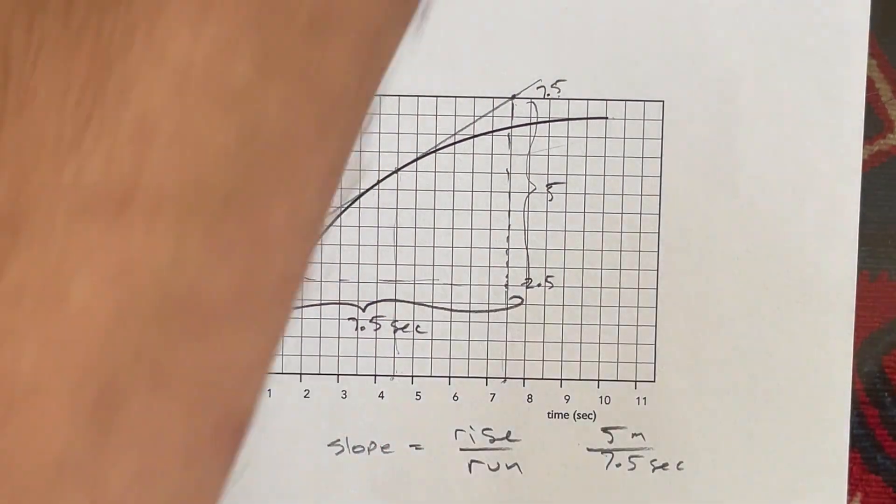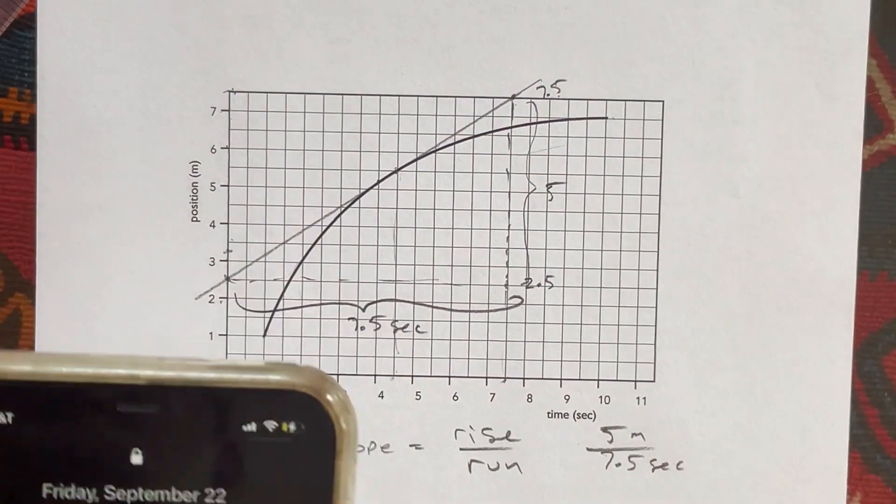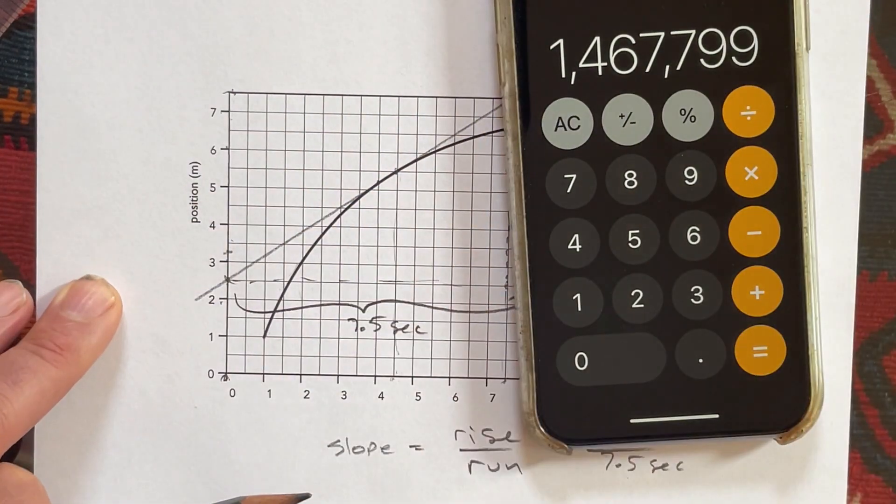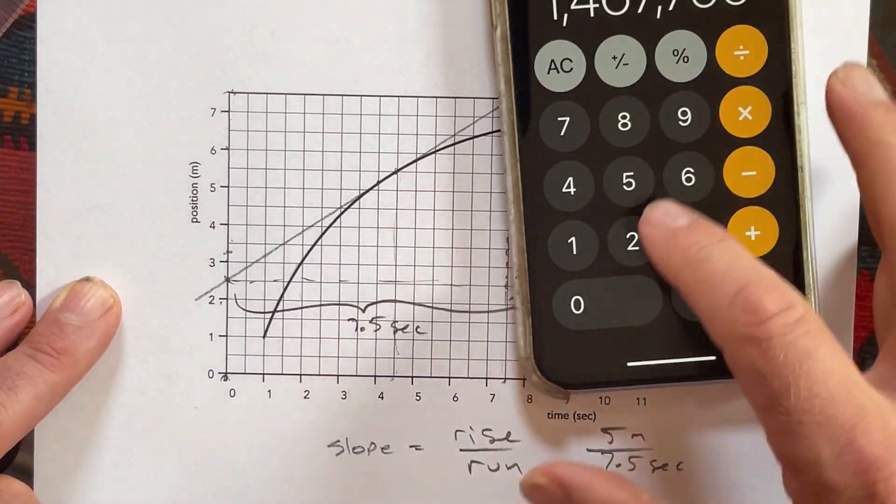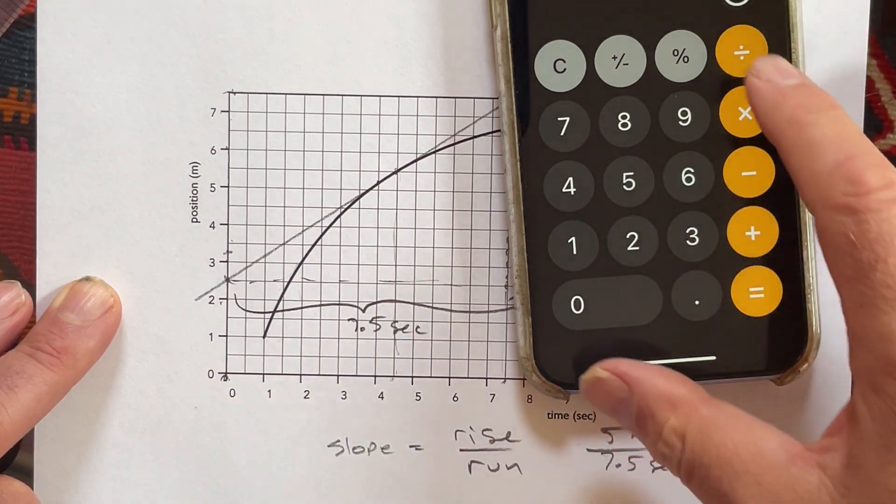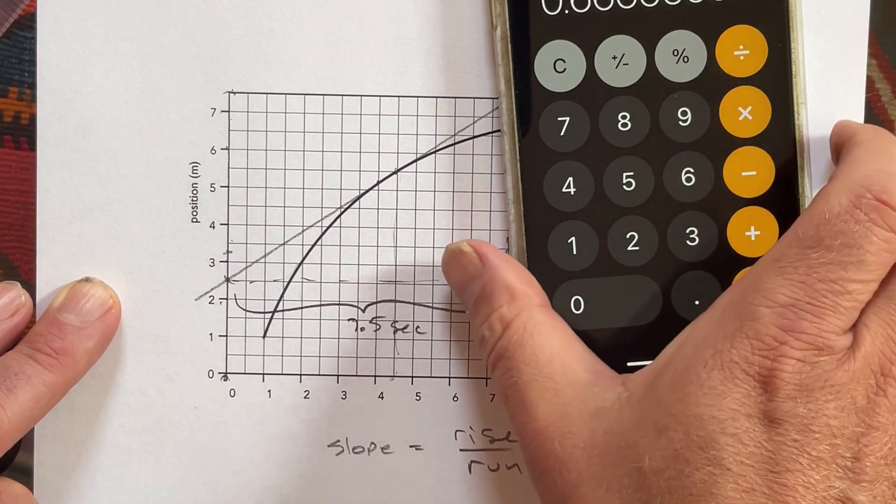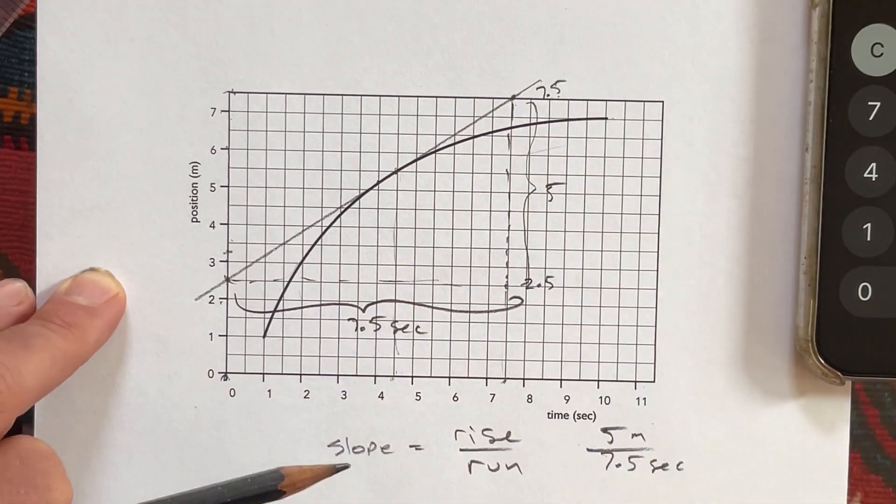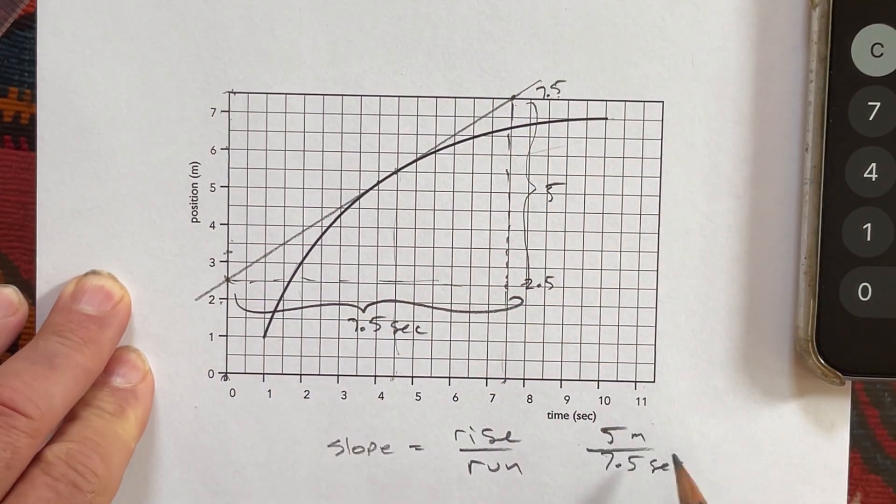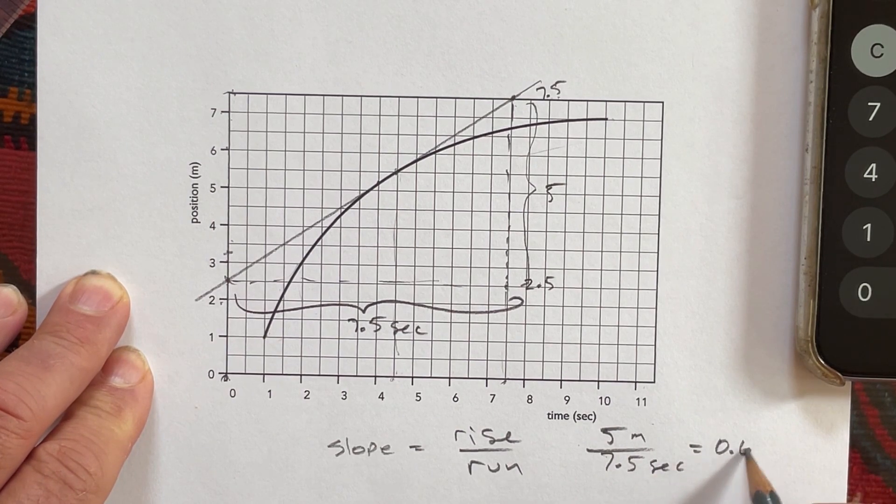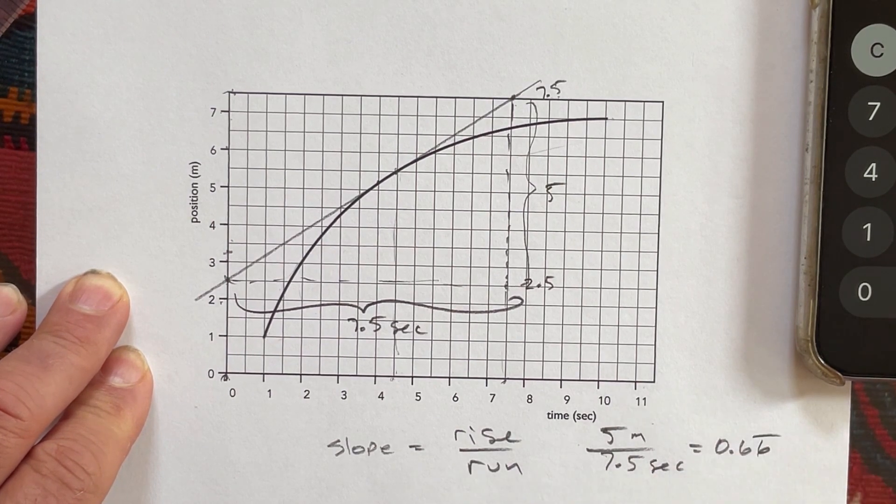So I'm going to grab a calculator. Actually, I'm going to grab my phone because it happens to be handy. And I'm going to go, what did I say, 5 divided by 7.5. And so my slope is 0.66, otherwise known as two-thirds. So I'm going to say that it's 0.66 repeating.